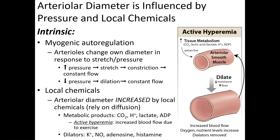The last variable is total peripheral resistance. The diameter of arterioles plays a huge role in regulating pressure and flow physiologically. The first intrinsic mechanism is myogenic auto-regulation — 'myo' means muscle, 'genic' from self, 'regulation.' Myogenic auto-regulation means arterioles can change their own diameter based on stretch and constriction — they can constrict or dilate by themselves based on factors happening inside them.